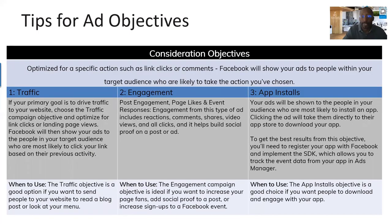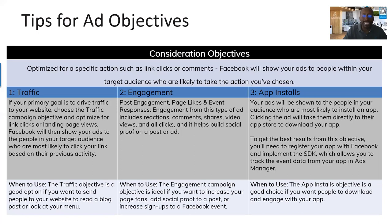The next objective is consideration, which optimizes for specific actions such as link clicks or comments. Facebook will show your ad to people within your target audience who will likely take action. You have traffic, engagement, and app installs. For traffic, the primary goal is to drive people to your website — it's a good option if you want to send people to your website or read your blog. For engagement, this is for increasing page likes, shares, comments, and reactions on a post.